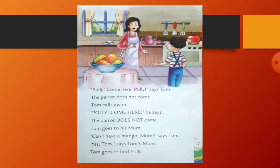Page 17. Polly, come here Polly, says Tom. The parrot does not come. Tom calls again — Polly, come here, he says. The parrot does not come. Tom goes to his mom. Tom asks, can I have a mango, mom? Yes, Tom, says Tom's mom. Tom goes to find Polly. Tom is calling again and again but the parrot does not come. Then Tom goes to his mother and asks for a mango.